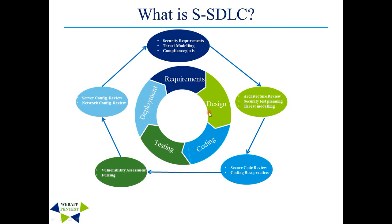Moving on to the design phase: we will carry out an architecture review to understand what security components can be implemented and what security standards can be followed. We will also do security test planning and threat modeling. In the coding phase, we will do a secure code review — once the code is written, we identify security vulnerabilities at the code level and ensure coding best practices are followed. Once coding is done and the interface is ready, it will be tested for vulnerability assessment, with various security test cases run against the application.